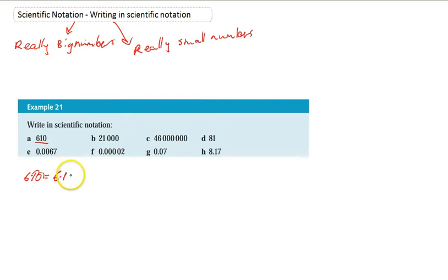Now it becomes 6.1 times 10 squared, 10 squared because we move the decimal place two places. Now we talked about moving the decimal place two places but what I'm really doing is multiplying by a hundred. So this says 6.1 times 10 squared which is 100 and 6.1 times 10 squared is 610. We're just saying that 610 is equal to 6.1 times 10 to the power of 2.